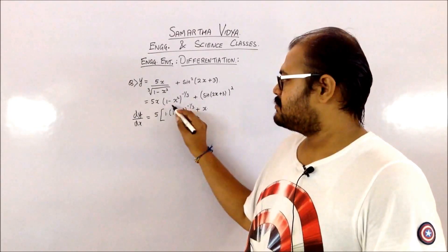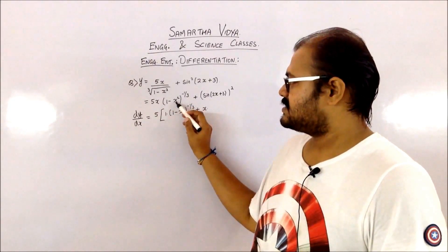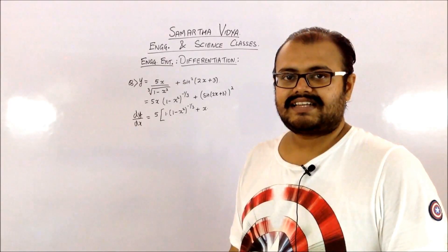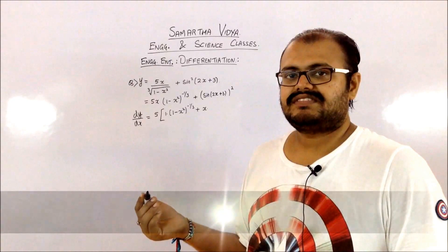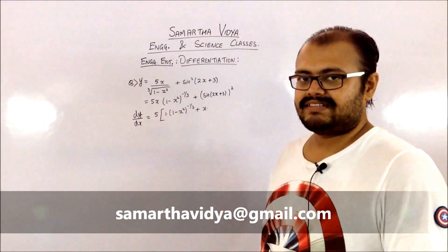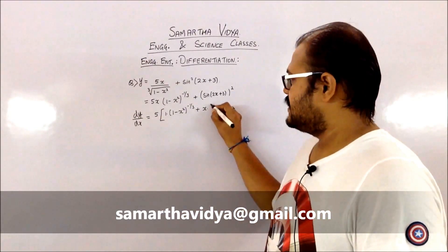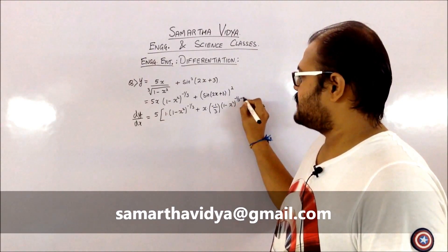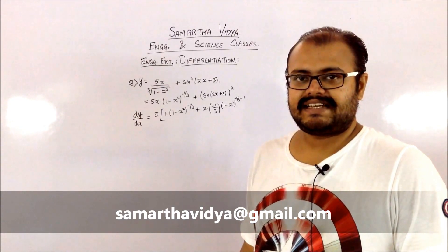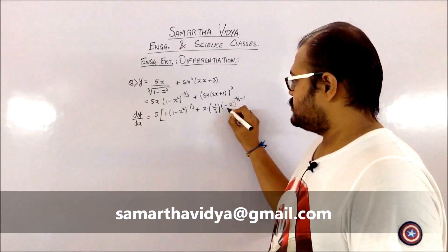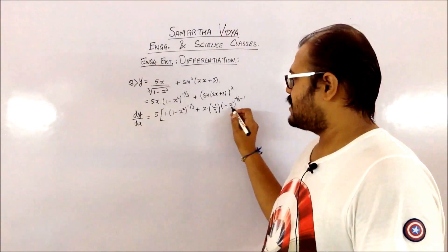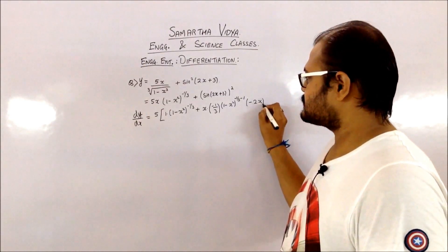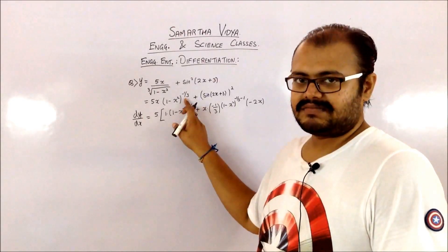The second term is a composite function: (1 minus x squared) is a function in itself, raised to minus 1/3. For a composite function you take the derivative of the outside function first, then go inside. The outside function is raised to minus 1/3, so its derivative is minus 1/3 times the term raised to (minus 1/3 minus 1), using the formula for x raised to n. Then you find the derivative of the inner term (1 minus x squared), which gives minus 2x.